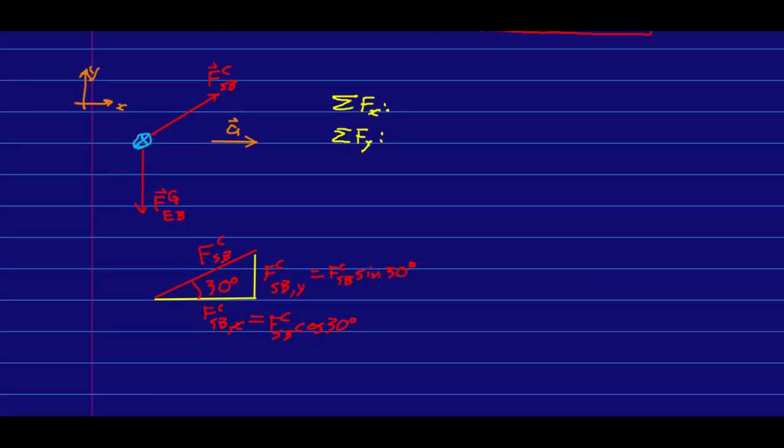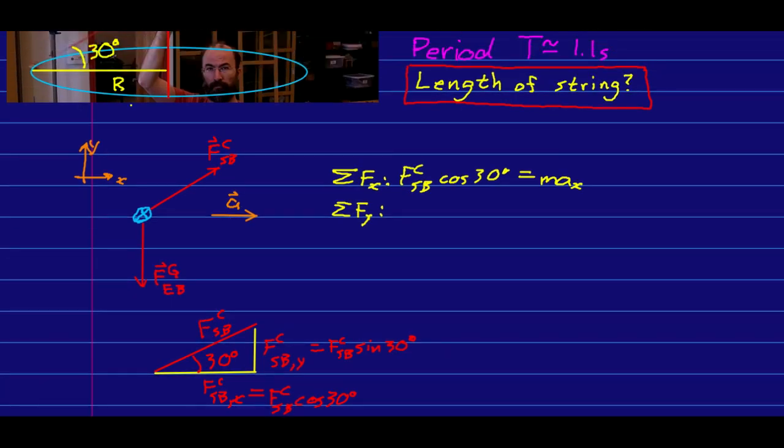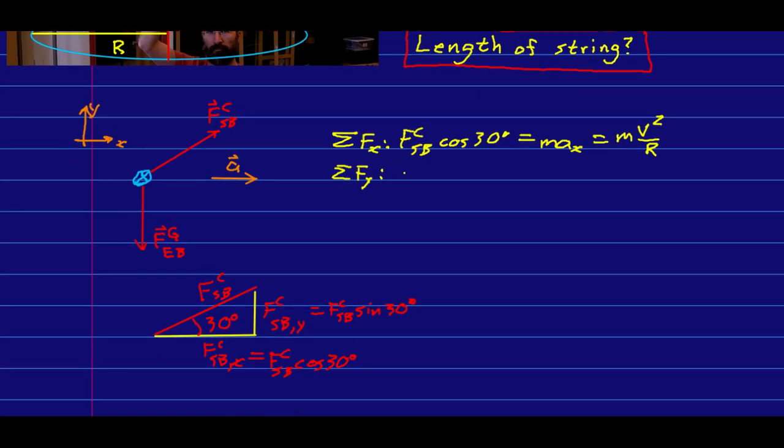And so now I can write my force sums. The only x component of any force here is the x component of the force due to the string, and so that equals mAx. Well, this is uniform circular motion, so the acceleration is directly into the center. And we know that that is parallel to our x-axis. So this is just the magnitude of A. And for circular motion, we know that's v squared over r. And then I can write the y component sum. And I can see that the y component of this acceleration is zero.